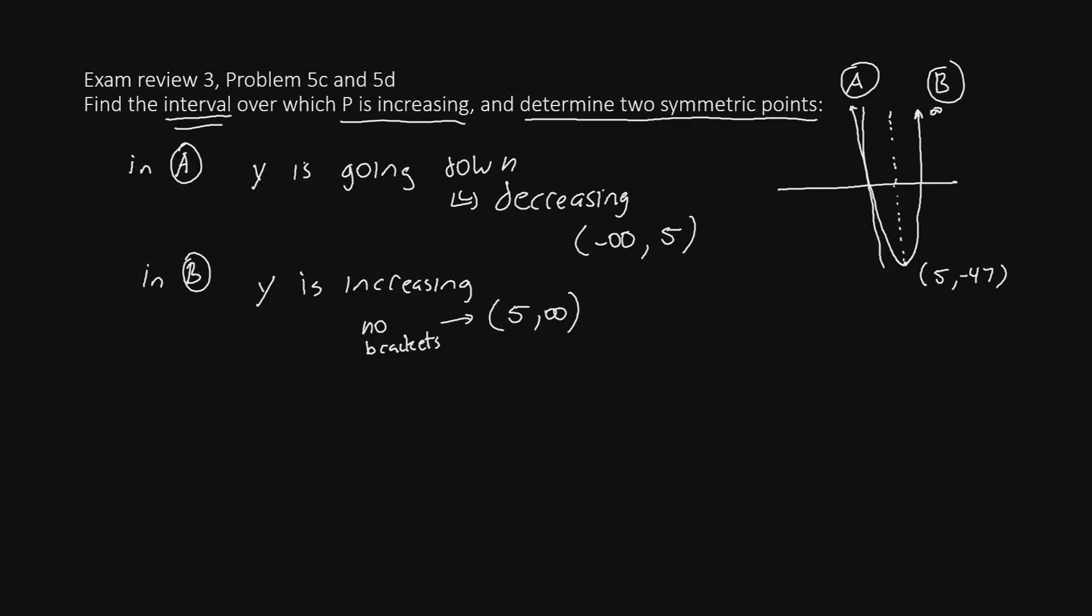Now for the last part of the problem, we were asked to determine two symmetric points. And we're going to use our transformation form to do that. So recall that our transformation form was 2 times x minus 5 squared minus 47. So our vertex was at x equals 5. There's a lot of different ways we could determine two symmetric points. But the easiest way is to try going one lower than 5, that's 4,